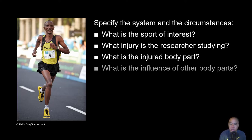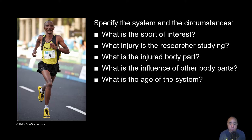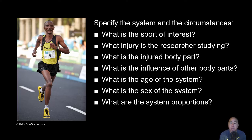The injury of interest ultimately determines the body part or system whose mechanics we analyze. If we're looking at shin splints, we may be interested in the foot and ankle. Even though we may be focusing on a specific body part, we should also be cognizant that other joints and segments will influence that body part. The body is a linked series of rigid body segments, so the movement of the foot and ankle will influence what the knee does, and vice versa.